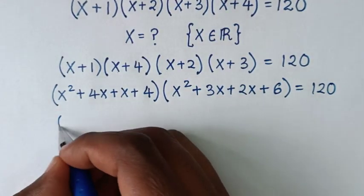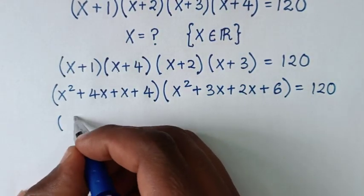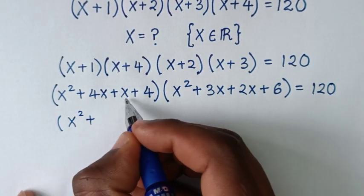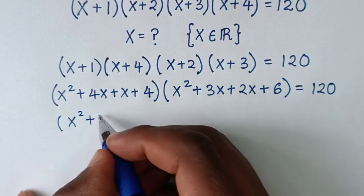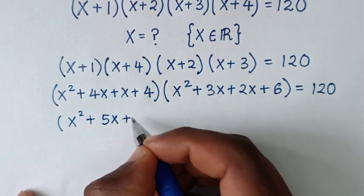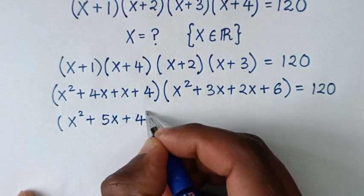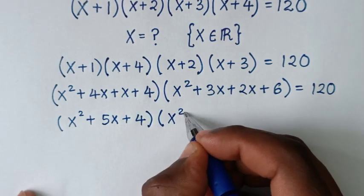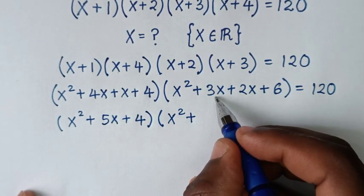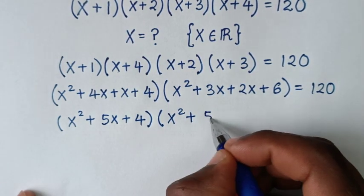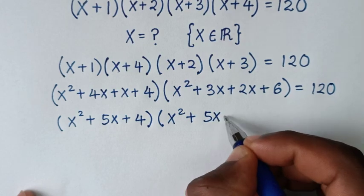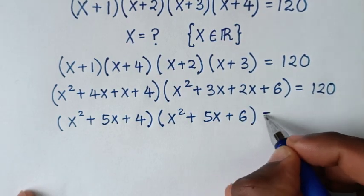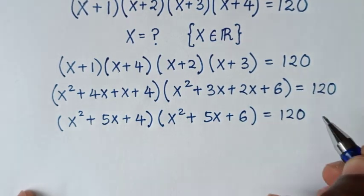Then, combining like terms: (x squared plus 5x plus 4) times (x squared plus 5x plus 6) is equal to 120.